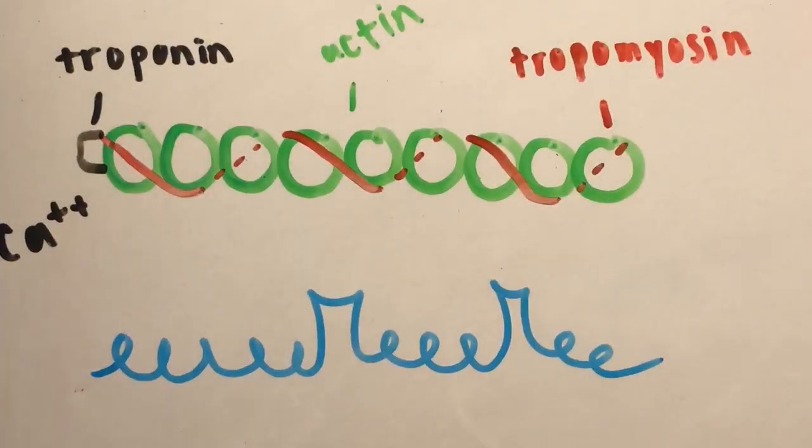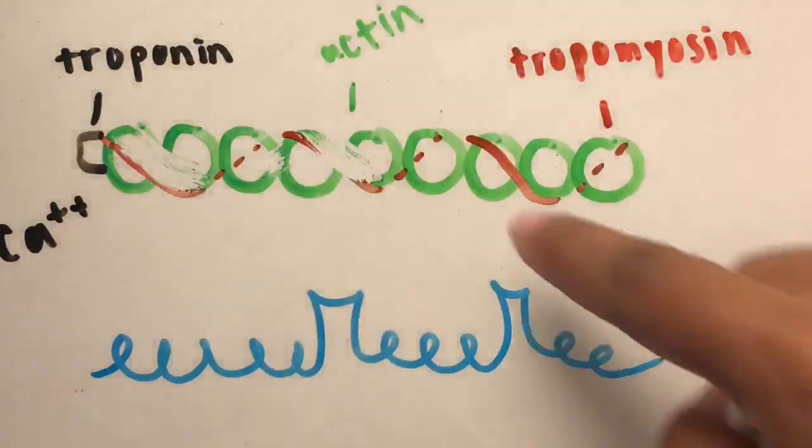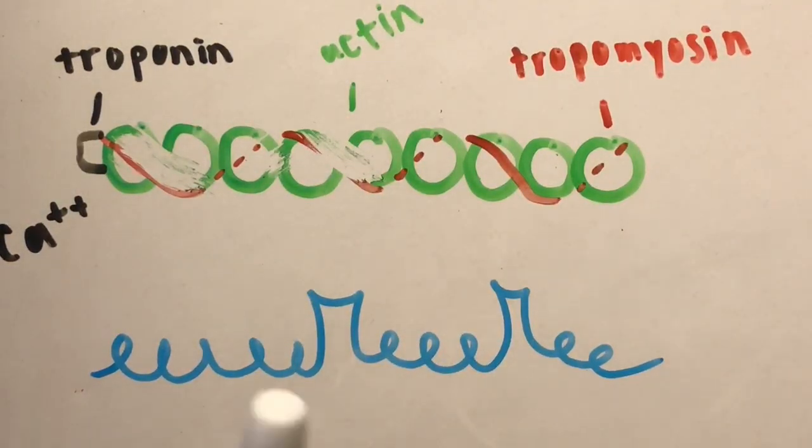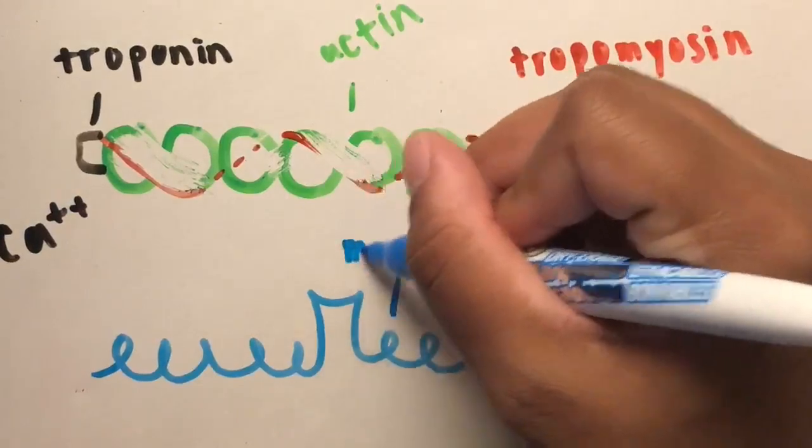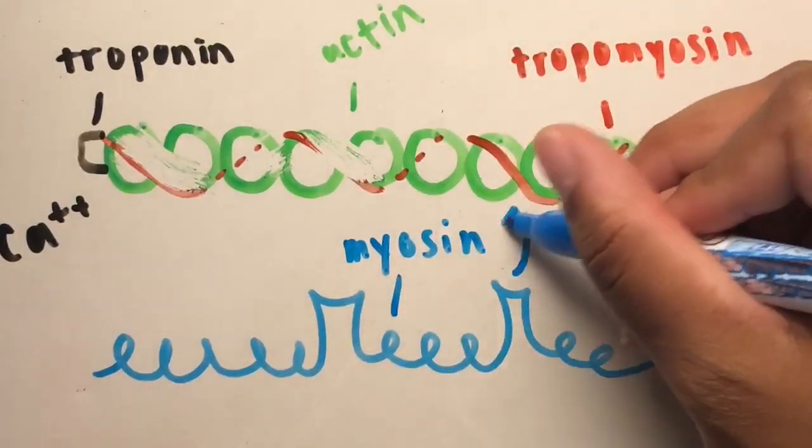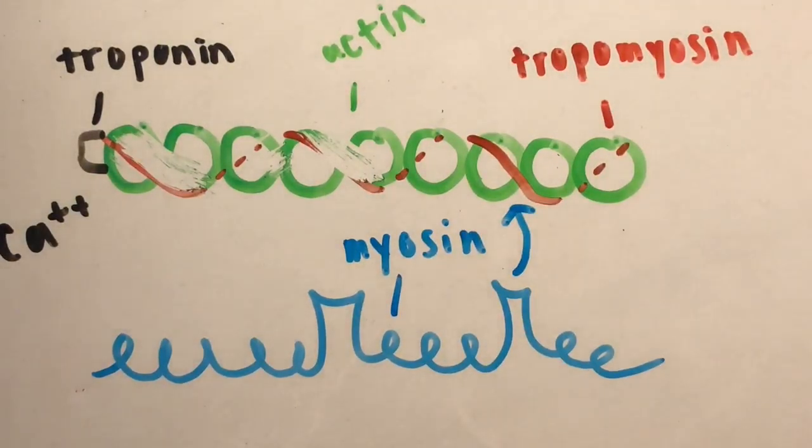Now that we have calcium, it is able to make its way to the actin site. Here, actin is surrounded by tropomyosin, which blocks the interaction between the actin and the myosin. However, because we have calcium, the tropomyosin slowly swivels away, exposing the bonding sites for myosin and actin.